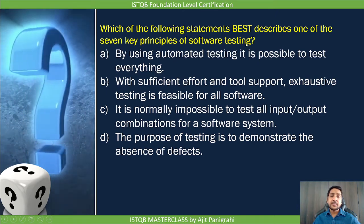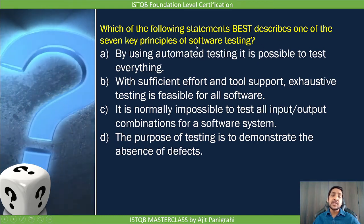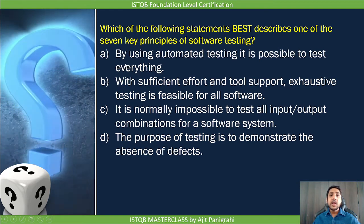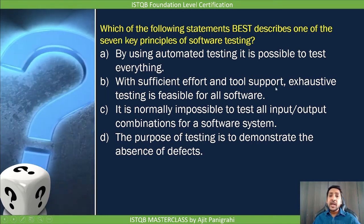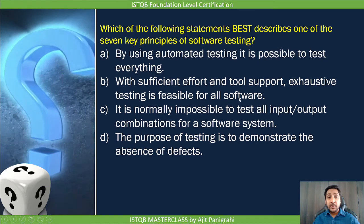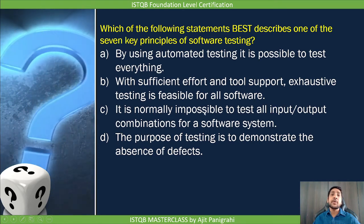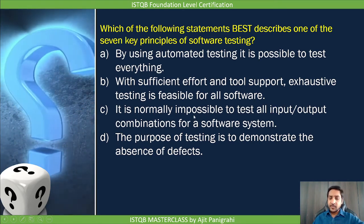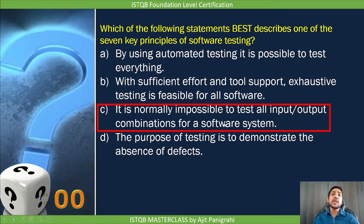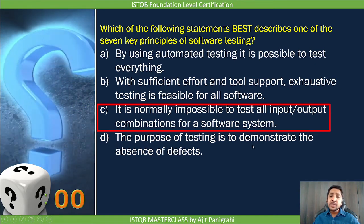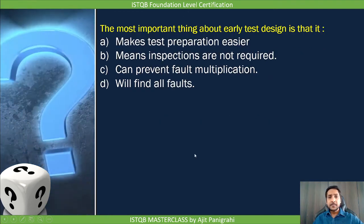Next question: Which of the following statements best describes one of the seven key principles of testing? Option A says automated testing makes it possible to test everything — false. Option B says exhaustive testing is feasible with sufficient effort — false. Option C says it is normally impossible to test all input combinations for software — yes, this is the exhaustive testing principle, so option C is the answer. Option D says the purpose of testing is to demonstrate absence of defects — also false.